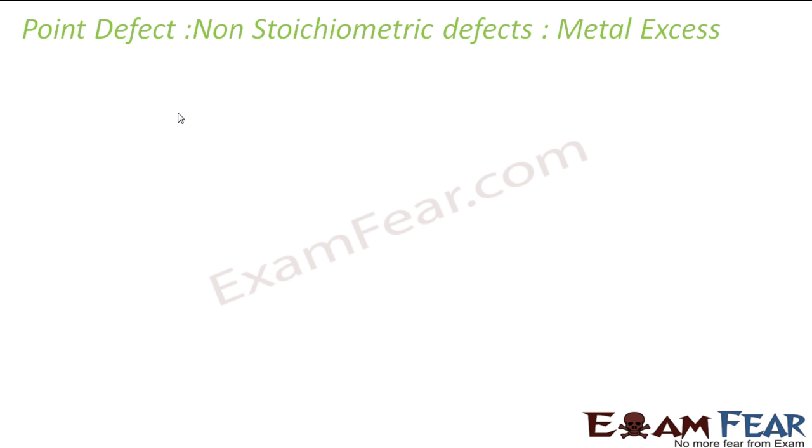So let's understand the metal excess. In fact, the metal excess also is by two ways. One is due to anionic vacancy, and the next due to extra cation in interstitial site. Let's understand the first one - due to anionic vacancy.